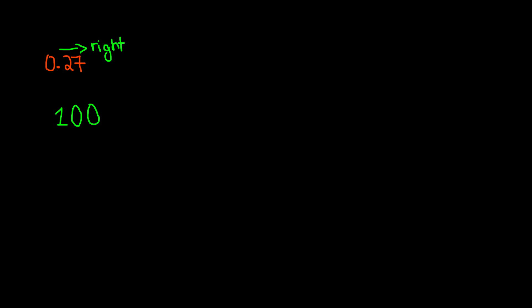So that means 0.27 can be written as 27 over 100 — this 100 is our denominator. This didn't take much time, but you just need to apply some common sense. The decimal point represents the 1, and the number of digits afterwards gives you the zeros. So this tells us our place value is going to be 100.